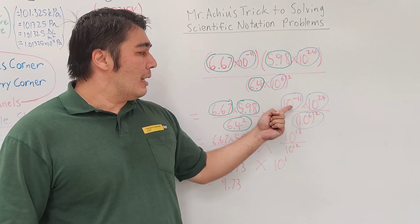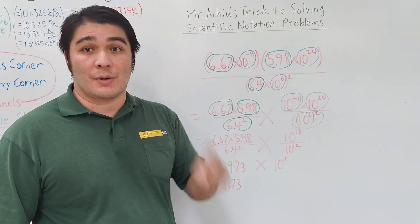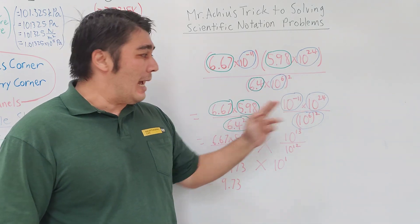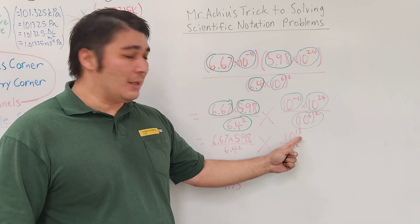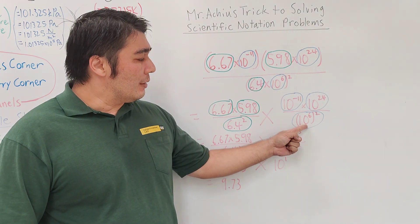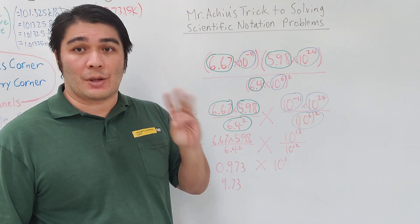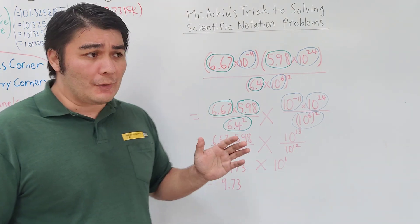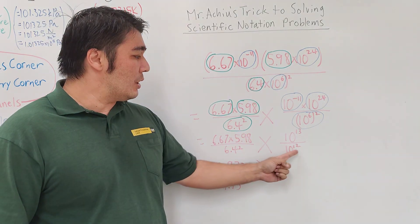In the numerator I have 10 to the negative 11th times 10 to the 24th. That's law of exponents number one, so I add them together: 24 minus 11 is 13. Then, 10 to the sixth quantity squared is law number three, so I multiply: 6 times 2 is 12.